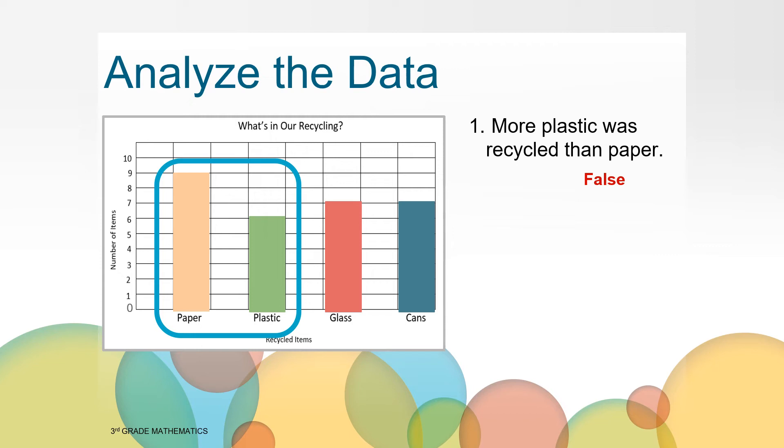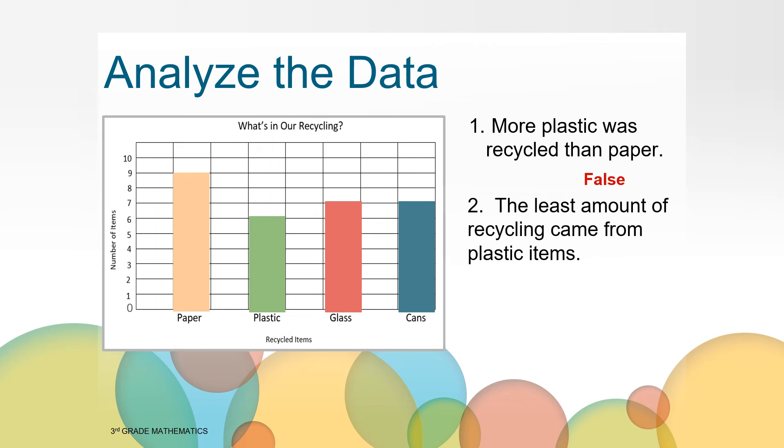Let's try another one. The least amount of recycling came from plastic items. Is this true or false? Yes, this statement is true. Use the information in the graph to tell us how you know this is true. That's right. The lowest bar is the one that belongs to the plastic items. That means the least number of items collected were plastic.